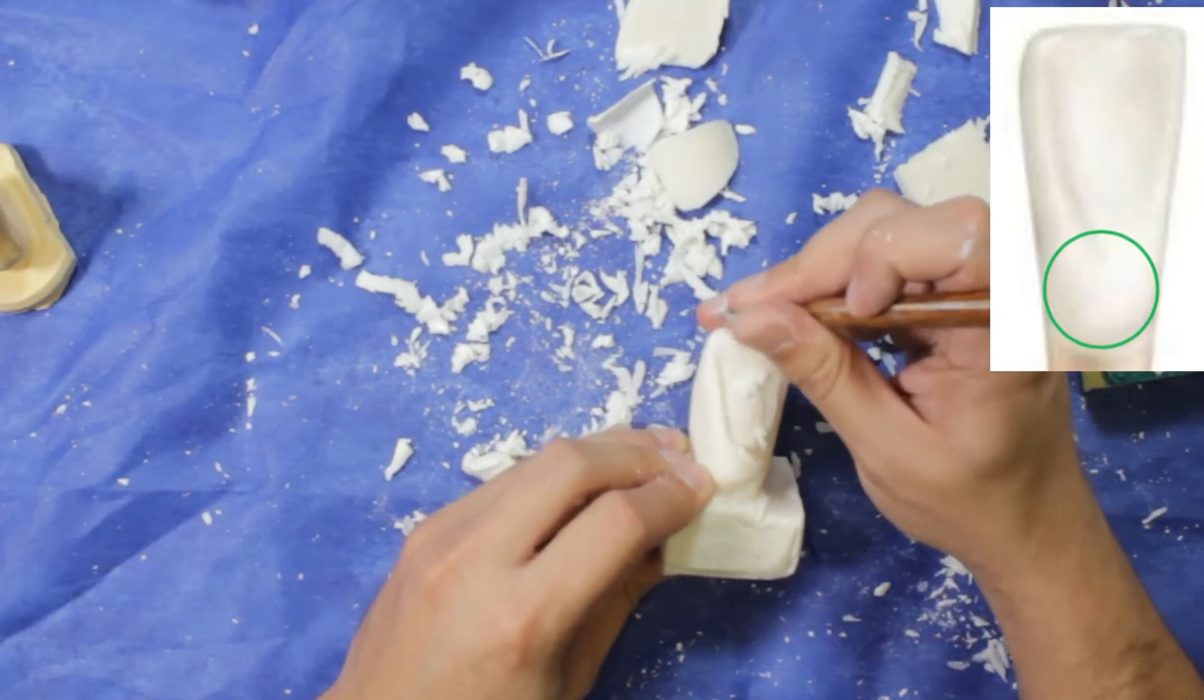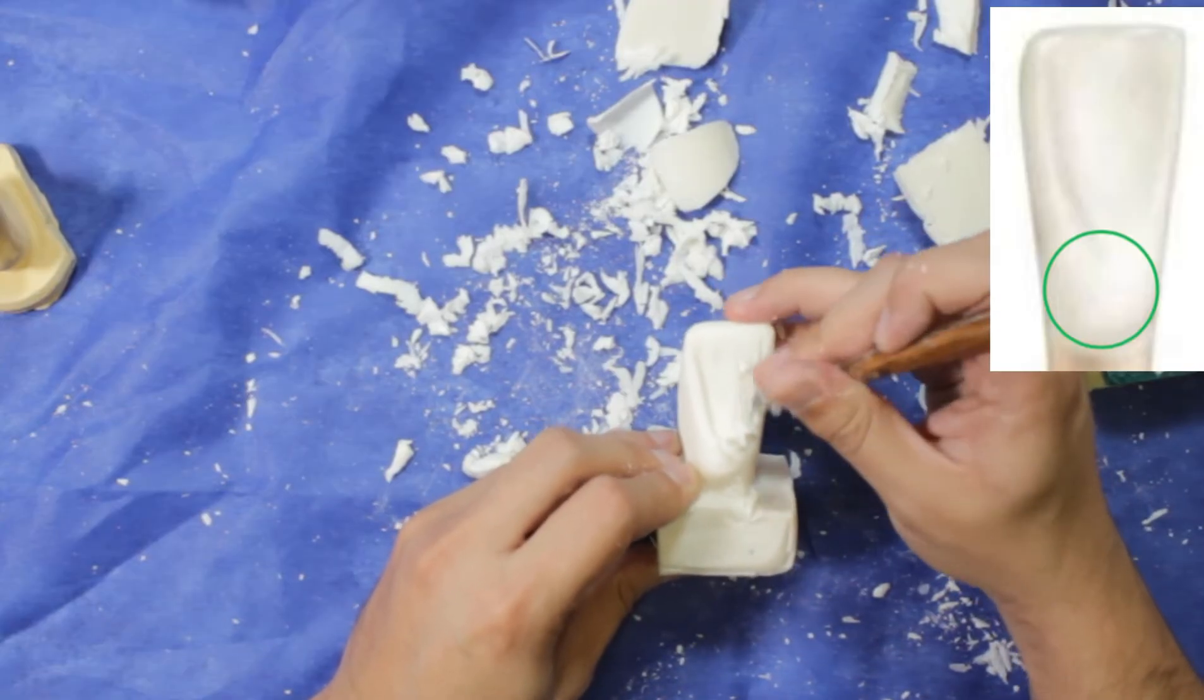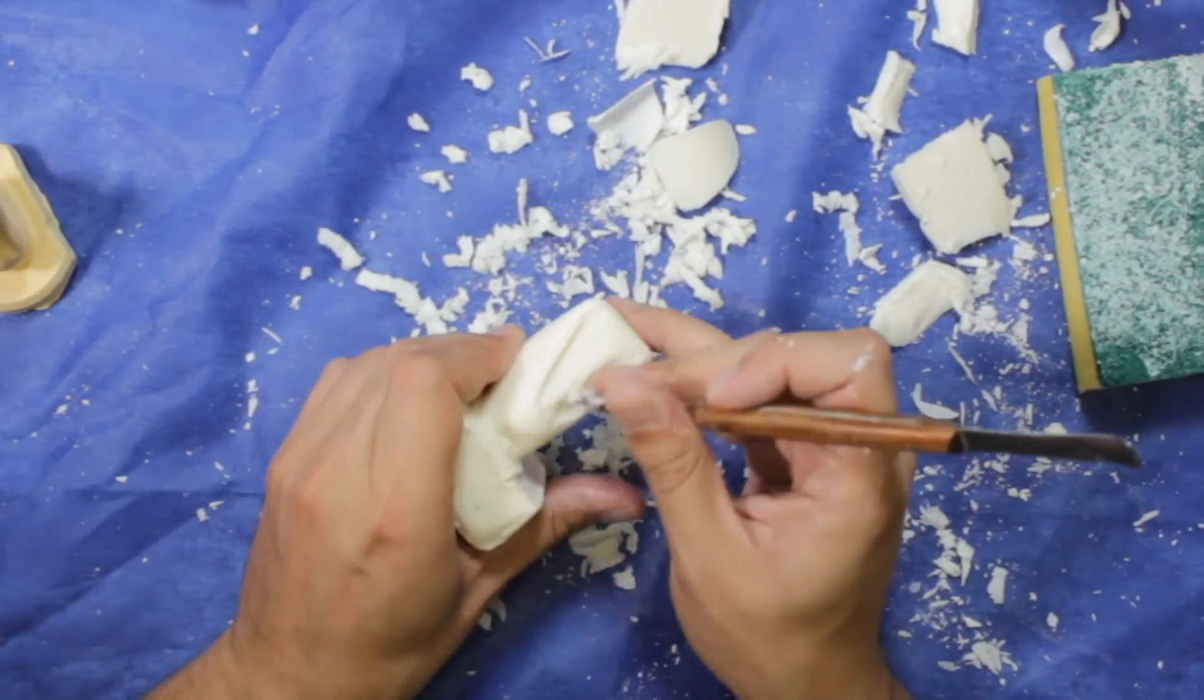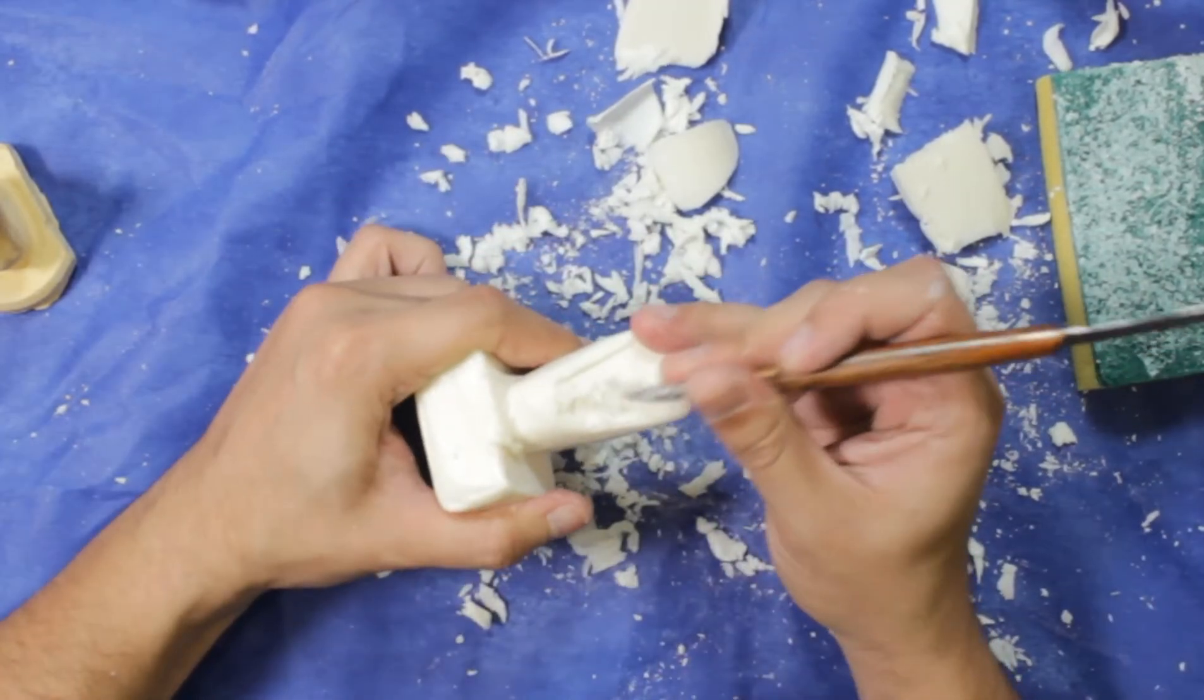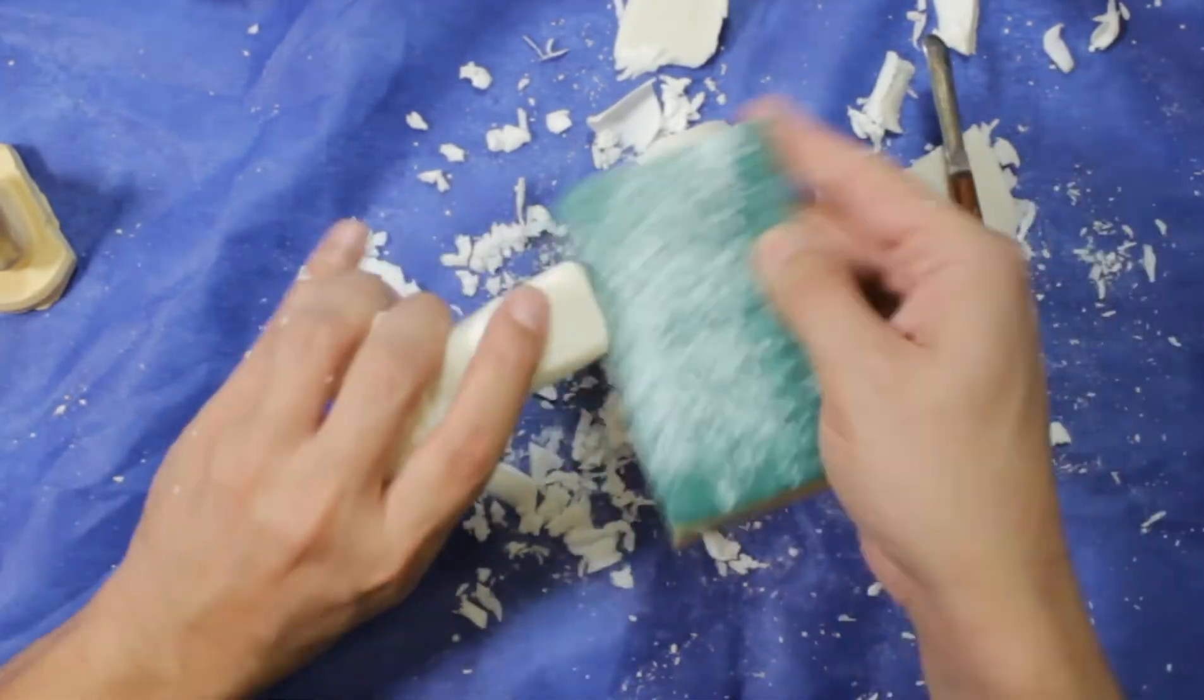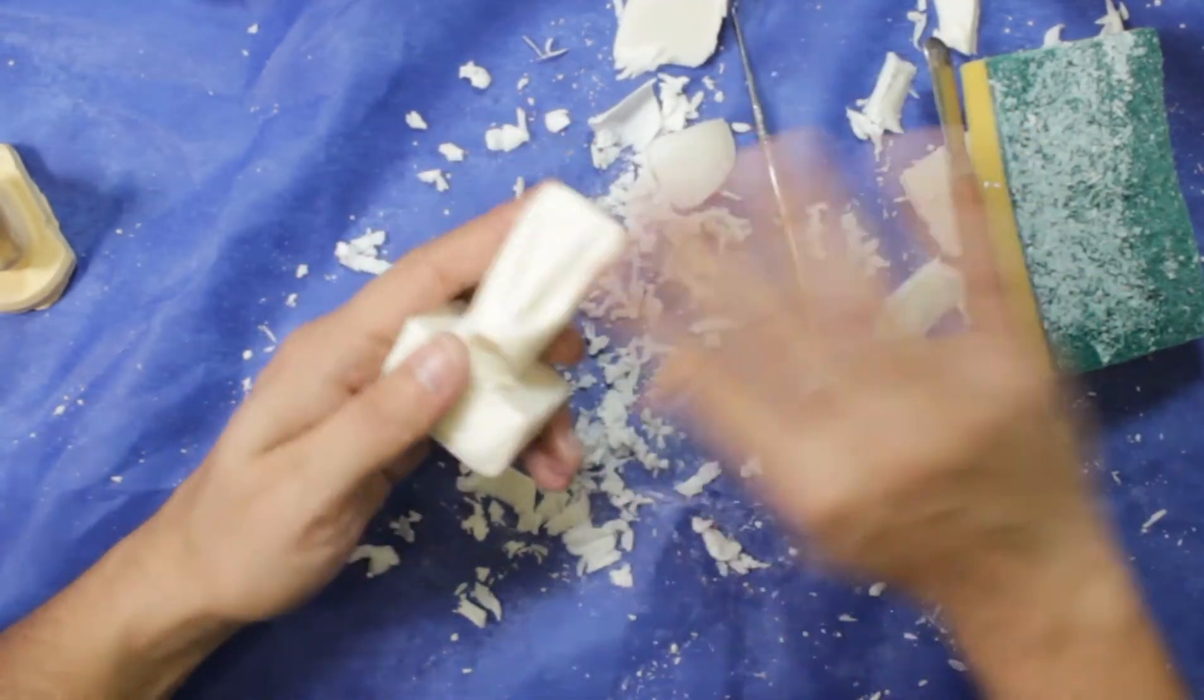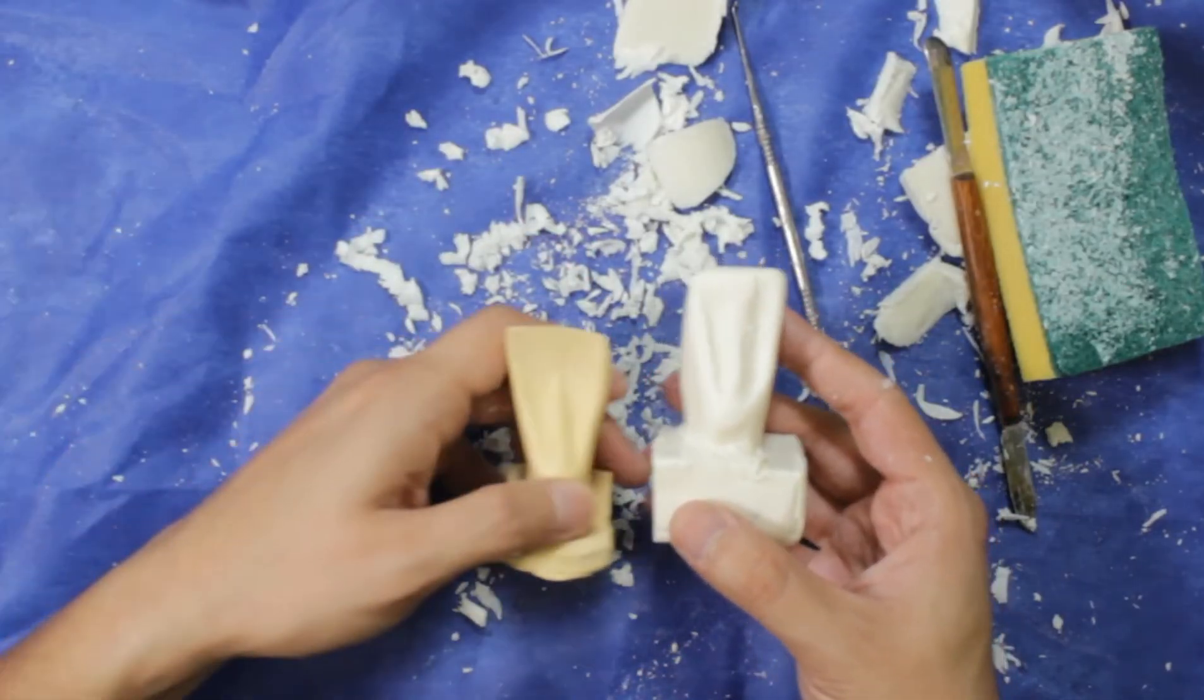You can also use the other side of the wax knife. With a smaller carver, you will have more control on the tooth, so it will be more careful.